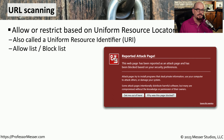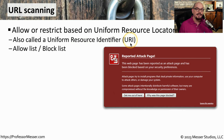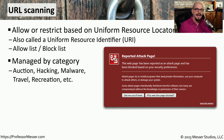One type of content filter filters based on a Uniform Resource Locator or URL. Sometimes you'll hear this referred to as a Uniform Resource Identifier or URI. If you would like your users to be able to access a particular website, you can add that URL to an allow list. And if you want to block that site, you would add it to a block list. Adding individual fully qualified domain names to these lists can be somewhat difficult to manage.